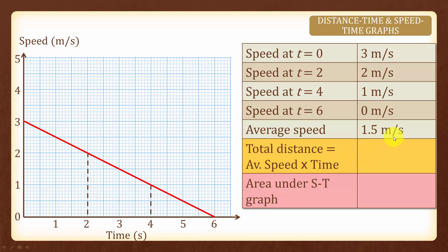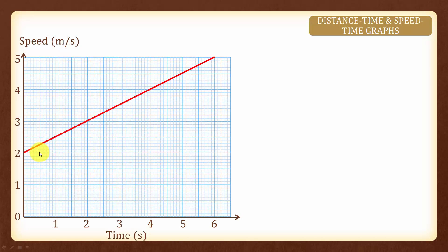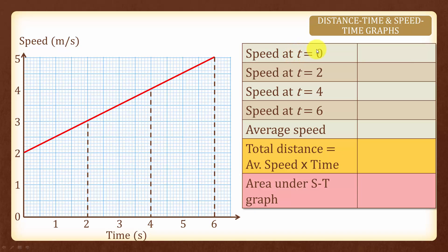The total distance is the average speed times the time which is 6, to give us 9 meters. Now what is the area under this speed time graph? It is half times base times height and we will have 0.5 times 6 times 3 to give us 9 square units. Once again, you will notice that the area under the speed time graph is the same as the total distance. Let us look at a final example here and we will look at the speed at t equals to 0 to t equals to 6.